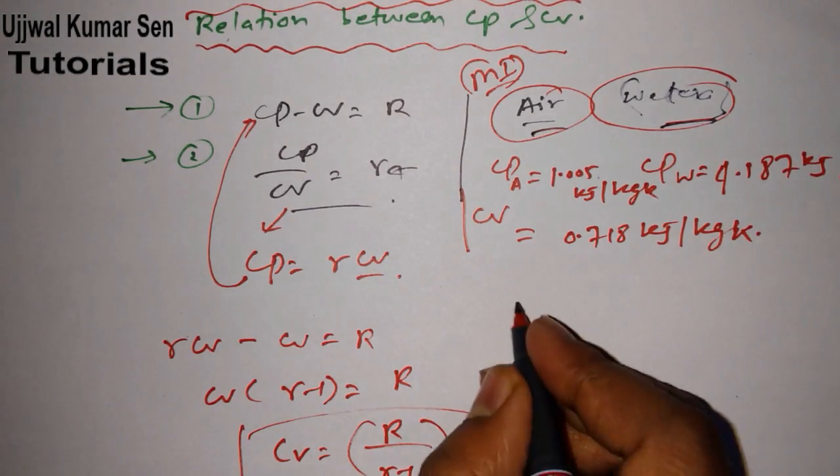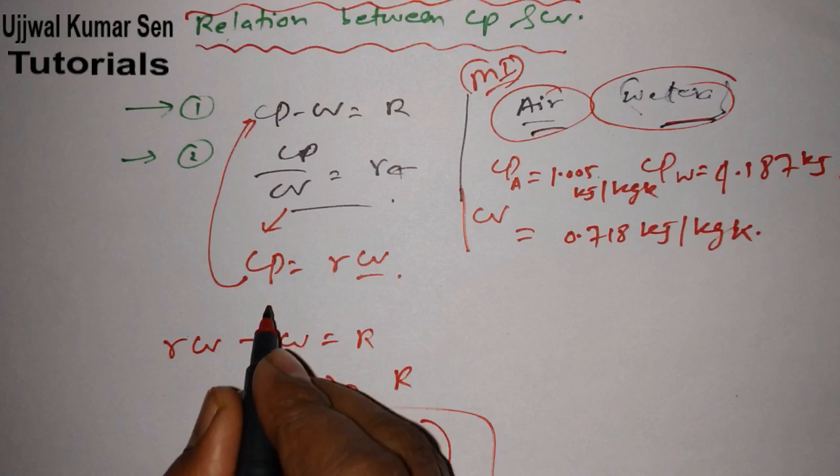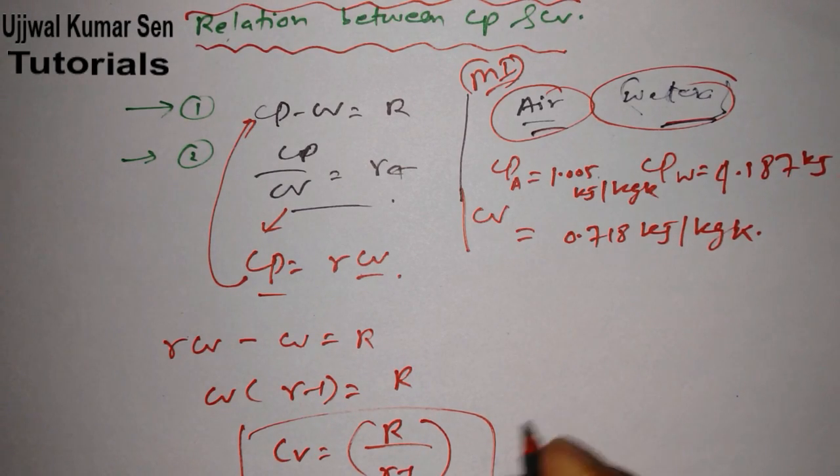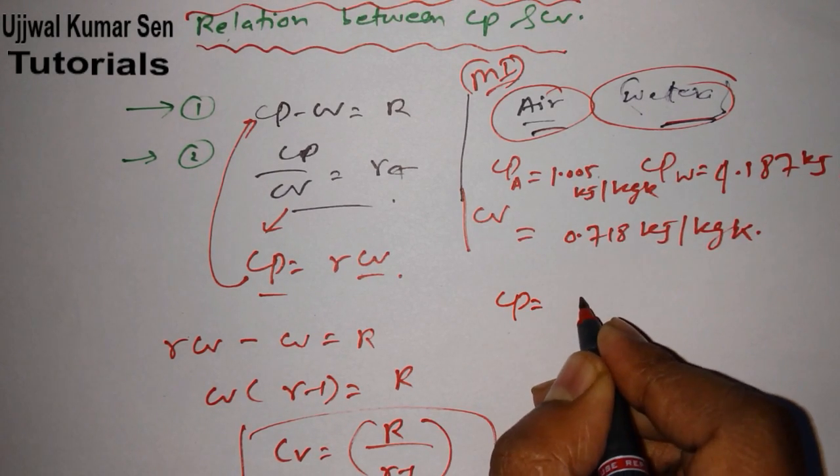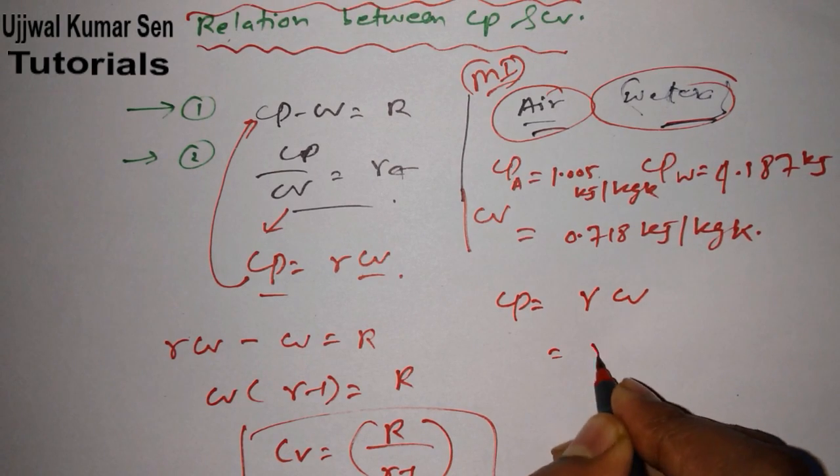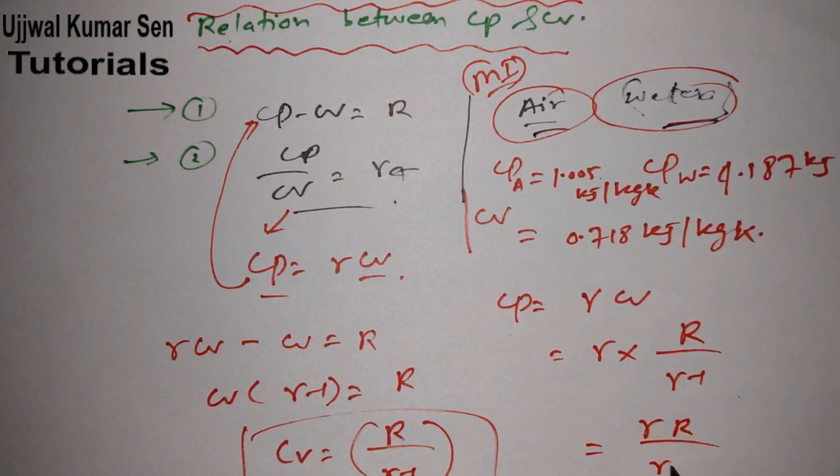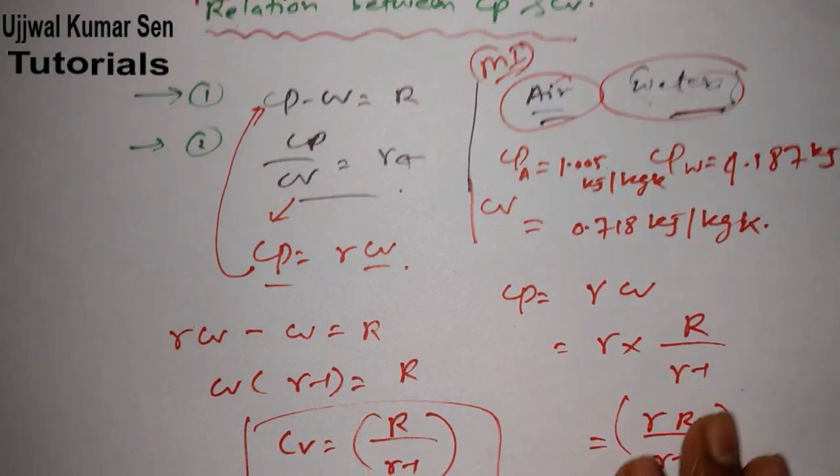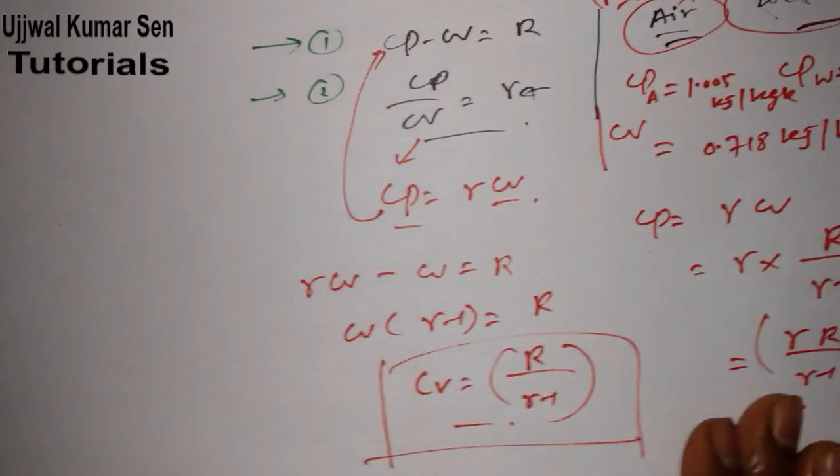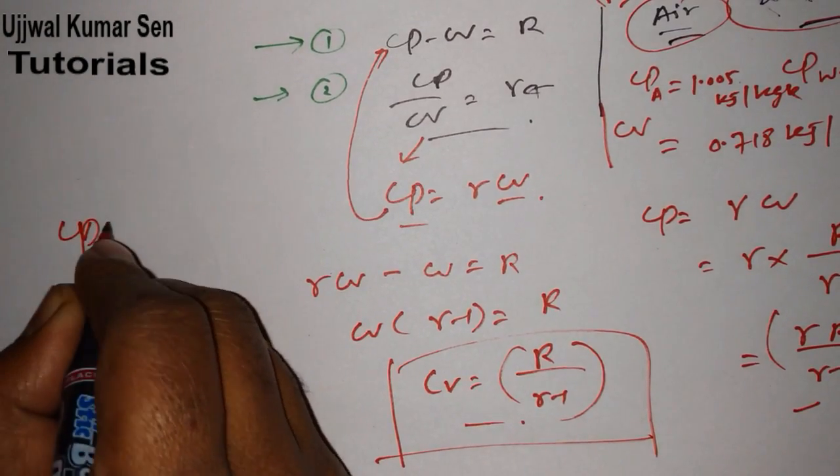Now we got this. Now what we can say? We know that CP is equal to gamma CV, so gamma R by gamma minus 1. So gamma R by gamma minus 1. So these are two relations.